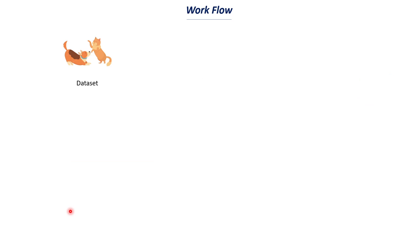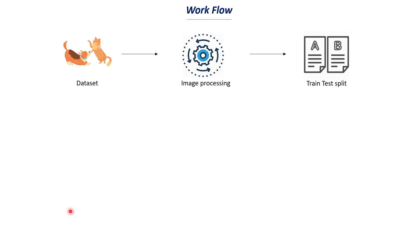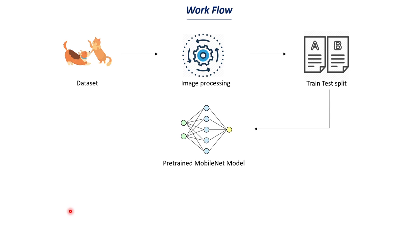Now let's understand the workflow we will be following. The first step is to collect the appropriate data — in this case, images of dogs and cats — and for that we will be using the Kaggle API to extract the data from Kaggle. Once we have this data, the next step is data processing: we will reshape these images and convert them into NumPy arrays. Then we split the data into training data and test data.